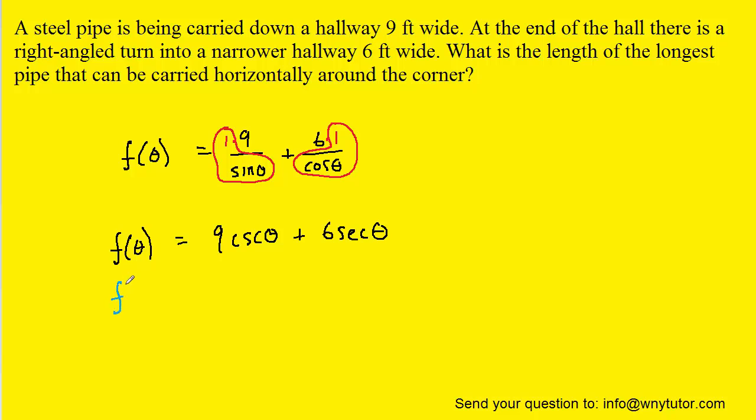Now, with those substitutions, we can calculate the derivative of this equation, f prime of theta. We do have to remember that the derivative of cosecant is negative cosecant theta cotangent theta. And then the derivative of secant theta is secant theta tangent theta. We could simplify this just a touch by moving this negative sign out into the front and dropping parentheses.